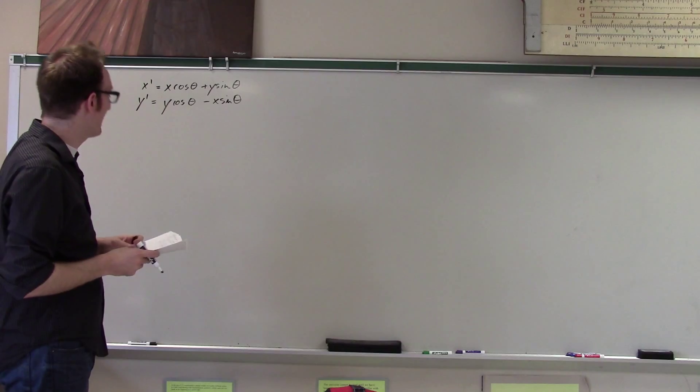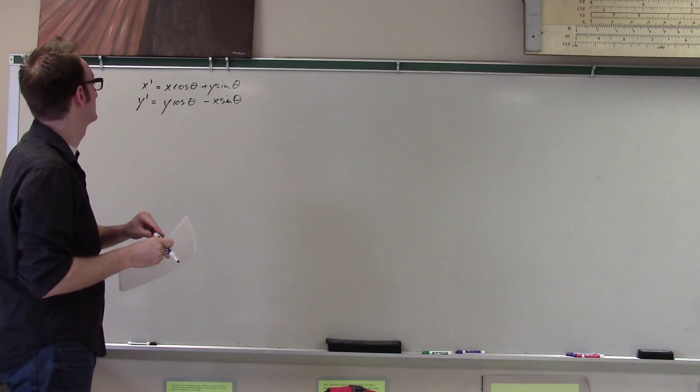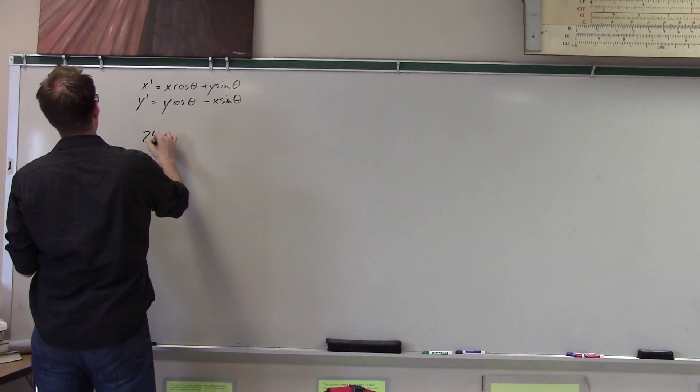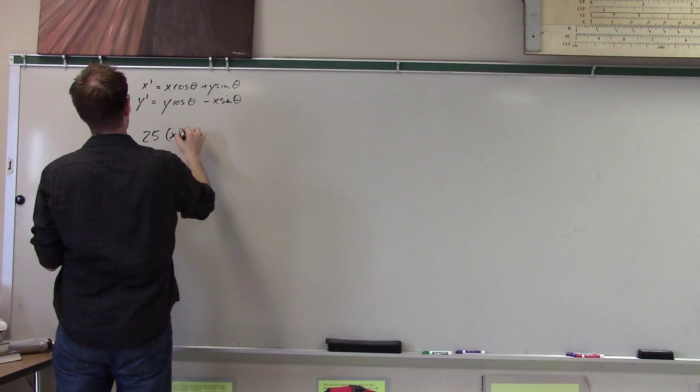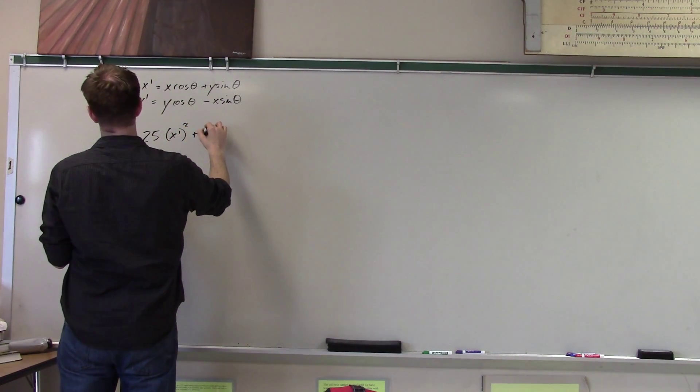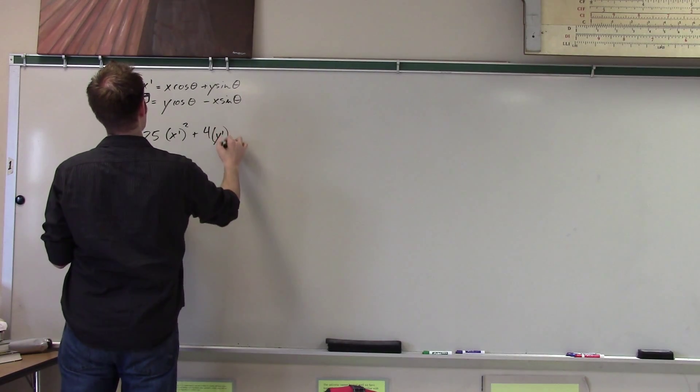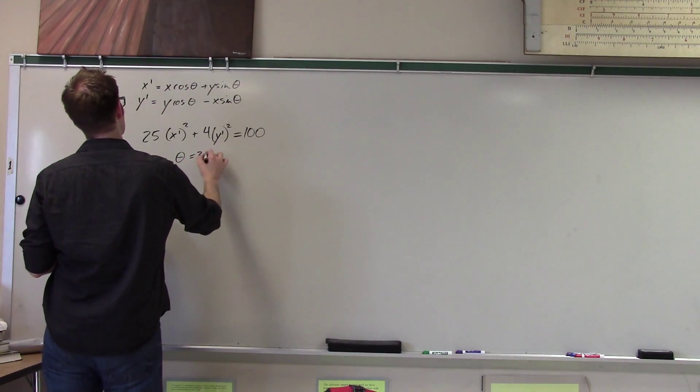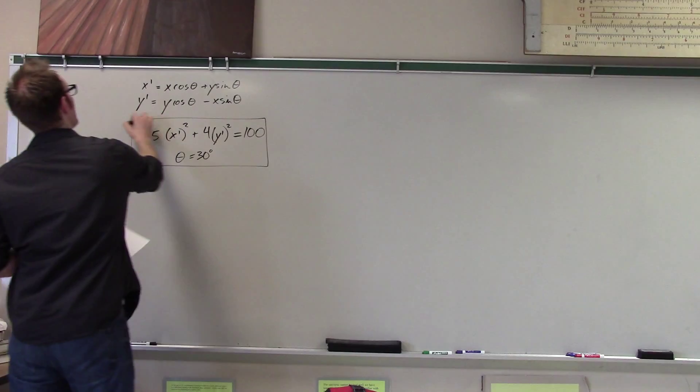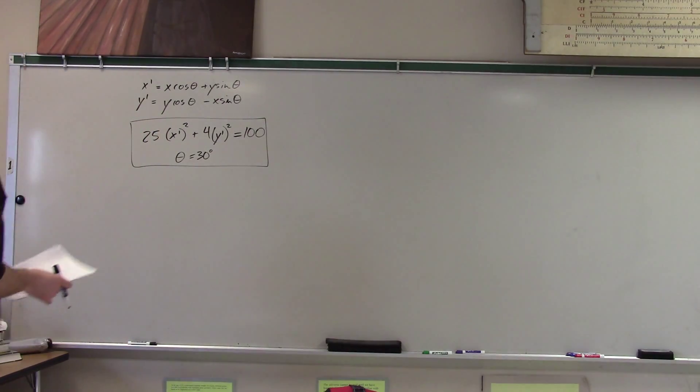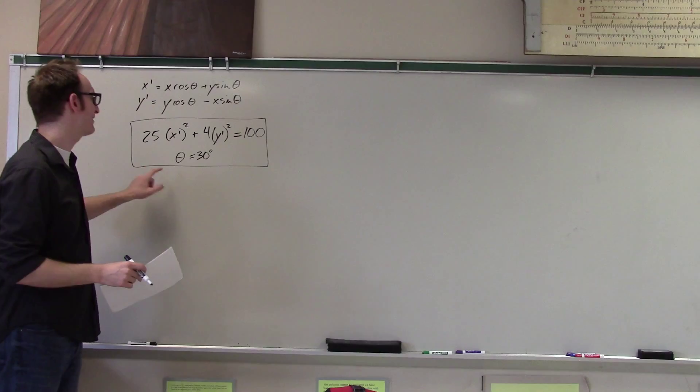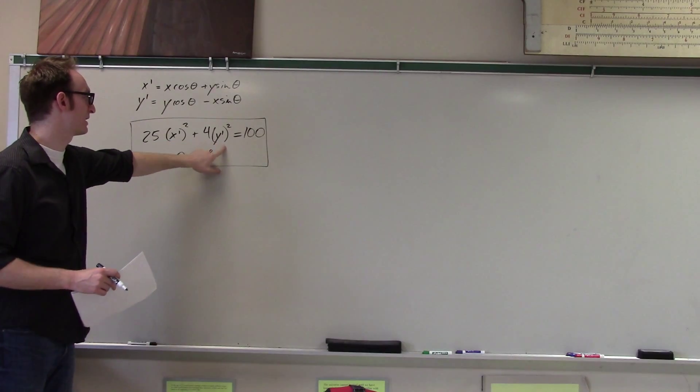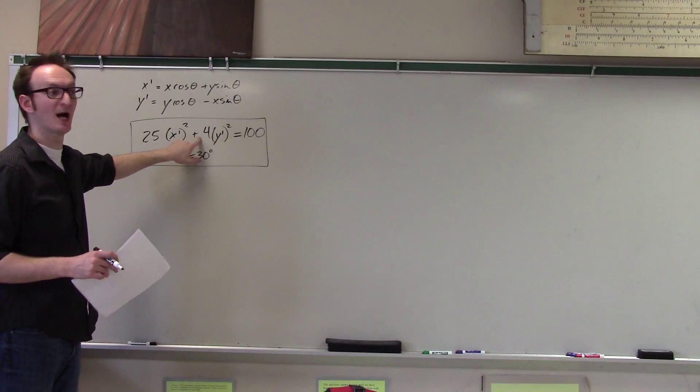Okay, keeping that in mind, I can now give you a certain problem. Here's a problem: take 25x prime squared plus 4y prime squared equals 100, and I'm going to tell you that theta equals 30 degrees. In other words, I'm introducing to you a conic in which the axes have been rotated by 30 degrees, and with respect to these new axes, this is a very happy conic.